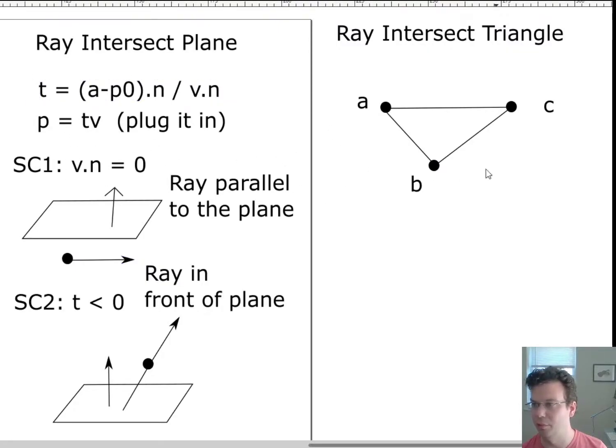What that means is I'm going to have to compute the normal of the triangle, which I know how to do. I can just take B minus A and cross that with C minus A. So there we go, B minus A and then here's C minus A. And that will give me the normal.